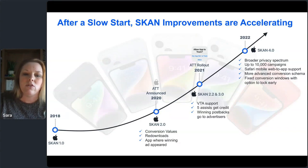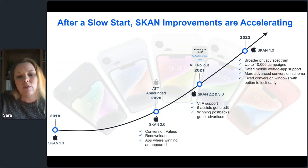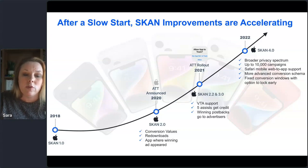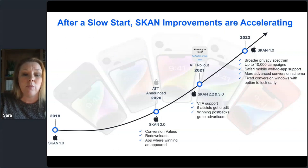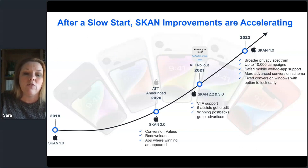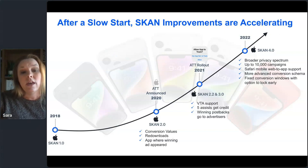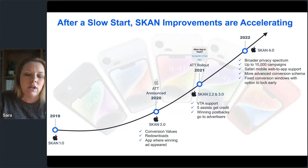A little bit about the history of SKAN — it landed with a thud back in 2018 with version one and was pretty much universally ignored. Starting when Apple announced app tracking transparency in 2020, it began to get features that gave some hope it could be a usable solution. That was followed up when ATT actually rolled out with enhancements including source view-through attribution, multi-touch attribution where up to five media partners could get assist credit, and advertisers could opt in to receive their own copy of a winning postback. SKAN 4 was announced in June 2022 and released in October 2022.